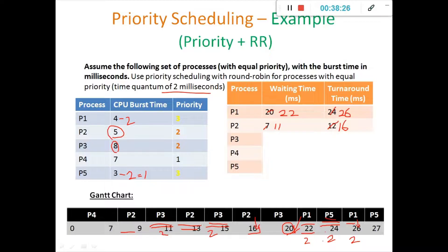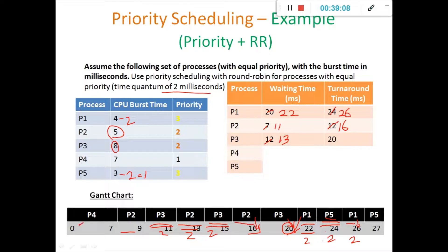For P3: 9, then again 2 so 9 plus 2 equals 11, then again it has to wait for 2 milliseconds — 11 plus 2 equals 13 milliseconds waiting time. P3 has completed at the 20th millisecond, so its turnaround time is 20. For P4, since it has the highest priority it started and completed its execution at a stretch — waiting time is 0 and its turnaround time is 7.